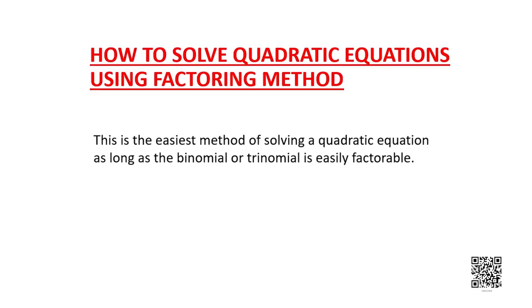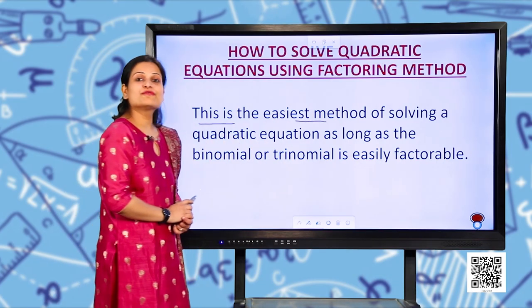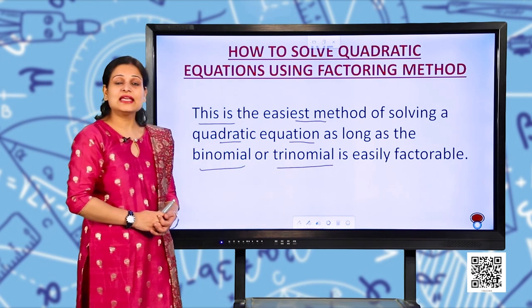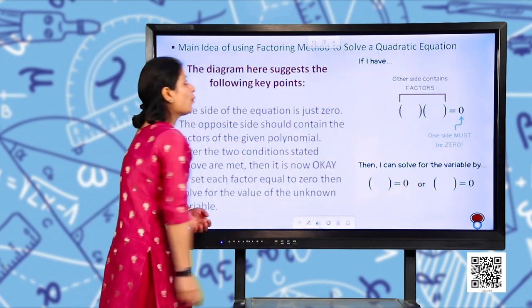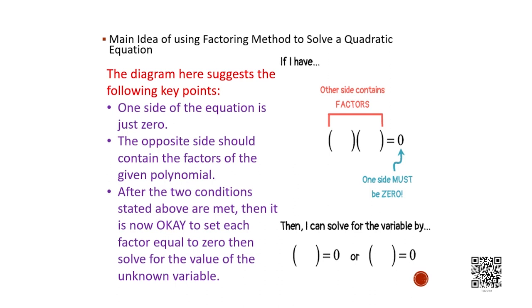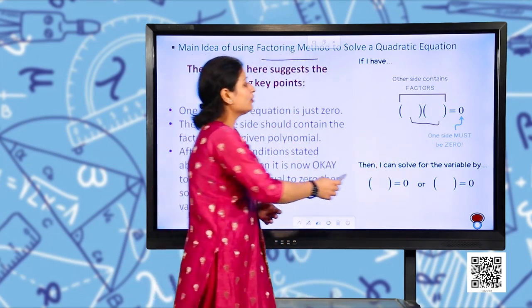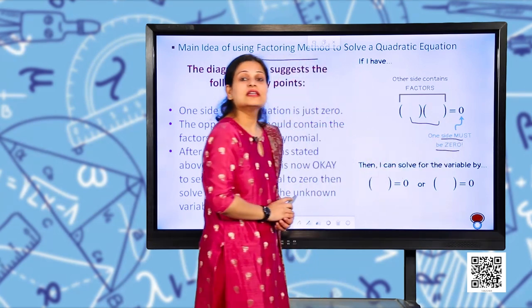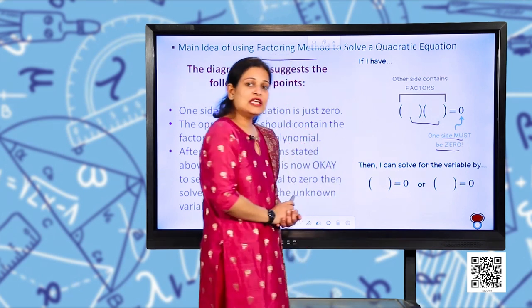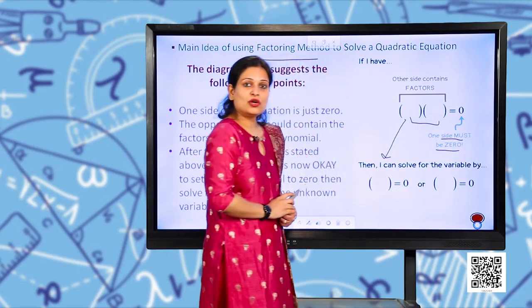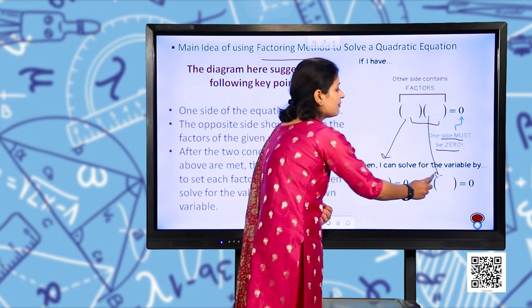How do we solve a quadratic equation using the factoring method? This is the easiest method of solving a quadratic equation as long as the binomial or trinomial is easily factorable. The main idea is: if I have the factors of the polynomial on one side and zero on the other side, I can easily solve for the variable. Each factor must be equal to zero.